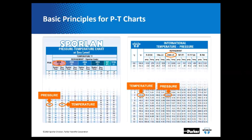This is what our pressure temperature charts look like. What a PT chart is telling you is the boiling point of a refrigerant at a specific pressure. On the left side of this picture, we have a pressure highlighted at 130 pounds, and 45°F would be the boiling temperature. So for 410A, if your evaporator is running at 130 pounds, your refrigerant is boiling at 45 degrees.